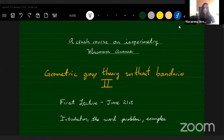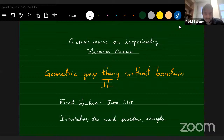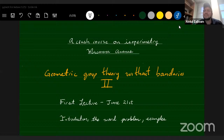Thank you all for coming. I'm going to be speaking about isoperimetry and isoperimetric functions in geometric group theory. The notion of an isoperimetric function permeates all areas of mathematics, and it's not surprising that it also pops up in geometric group theory.